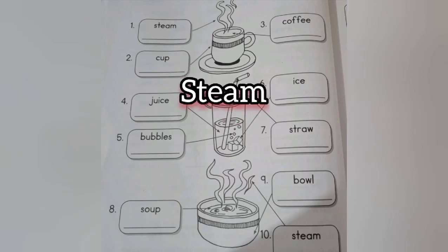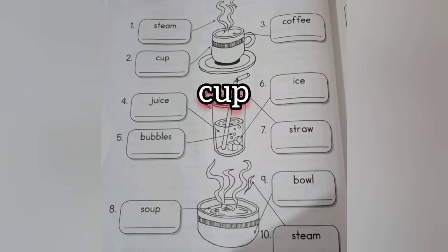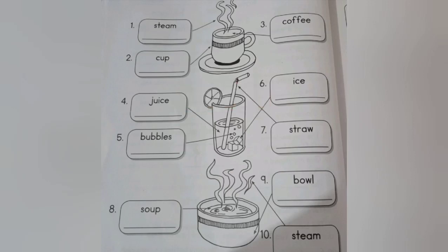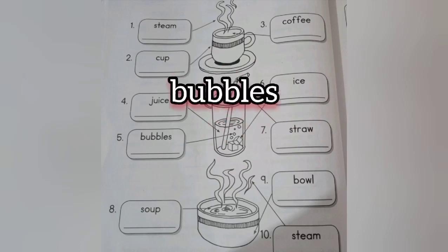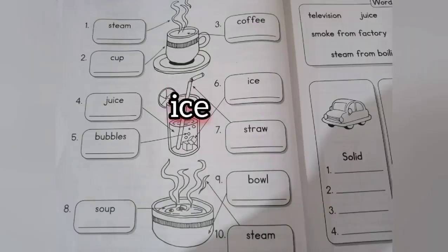Now let's answer this. Number one, steam — it's a gas. Number two, cup — it's a solid. Number three, coffee — it's a liquid. Number four, juice — it's a liquid. Number five, bubbles — they are gases. Number six, ice — it's a solid.